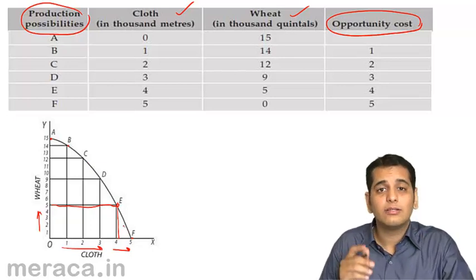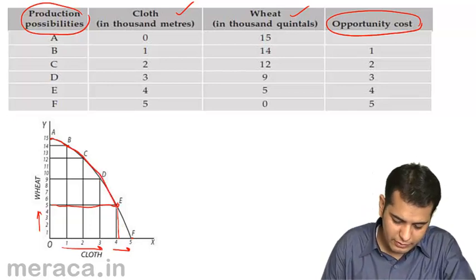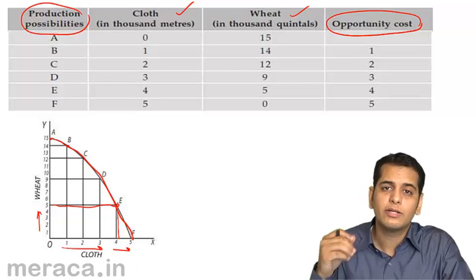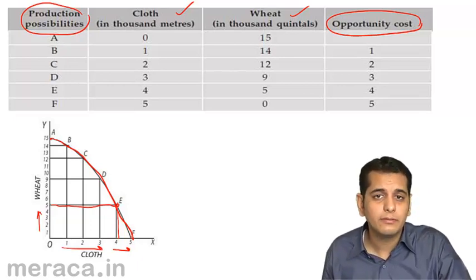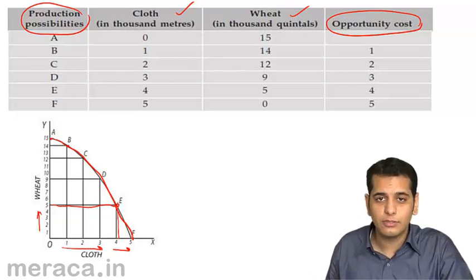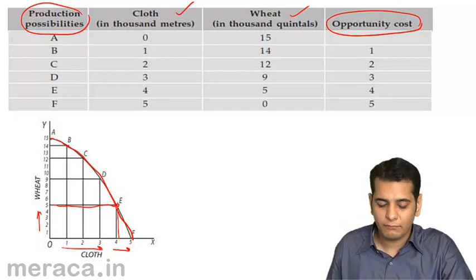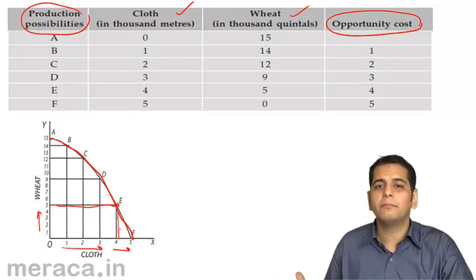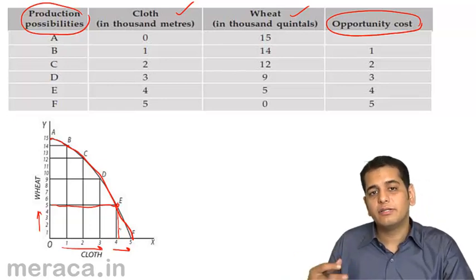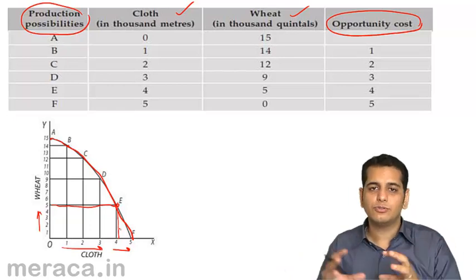This is the curve that sets the limit for our production. We cannot produce more than this. Why? Because the resources are limited. We cannot go beyond this curve — this is the production possibilities frontier. But it is giving us various combinations, various possibilities in which we can produce two goods.